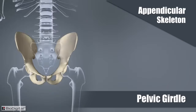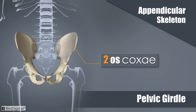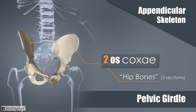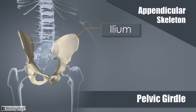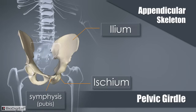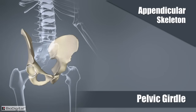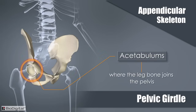The pelvic girdle is the structure to which the leg bones are attached. The pelvic girdle is made up of two oscoxi, or hip bones. Each hip bone is divided into three sections: the ilium, the ischium, and the symphysis, or pubis. The leg bones are attached to the pelvic sockets called the acetabulum.